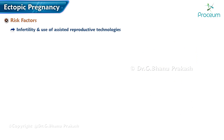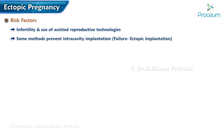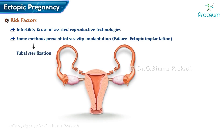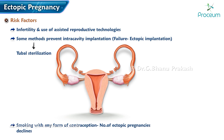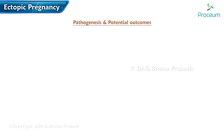Infertility and the use of assisted reproductive technologies are linked to increased ectopic pregnancy rates. However, some methods more efficiently prevent intracavitary implantation, and with their failure, ectopic implantation is favored — these include tubal sterilization and smoking. With any form of contraception, the absolute number of ectopic pregnancies declines because pregnancy is effectively prevented.